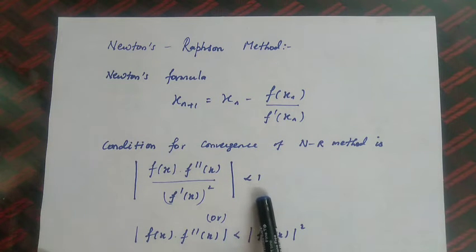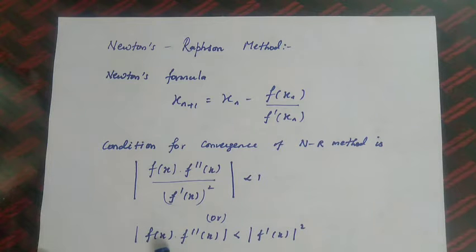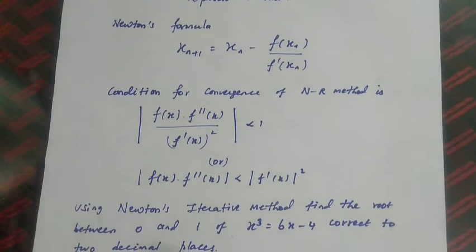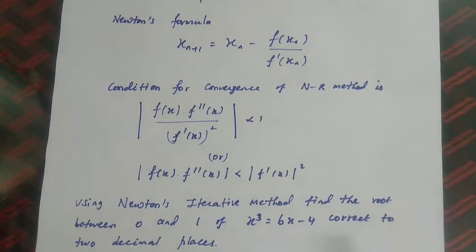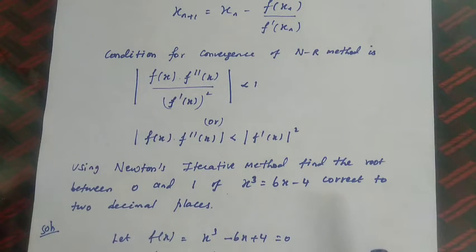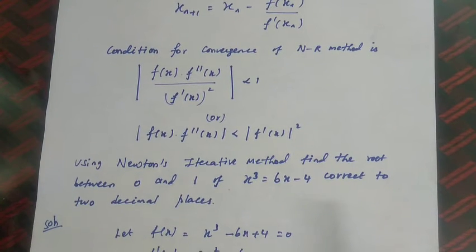There are two important questions under the Newton-Raphson method. The convergence condition is |f(x) · f''(x)| < |f'(x)|². For the first problem: using Newton's iterative method, find the root between 0 and 1 of x³ = 6x - 4, correct to two decimal places.